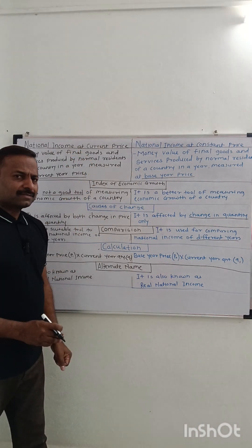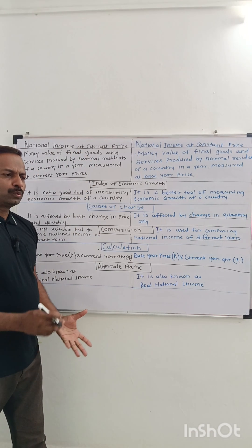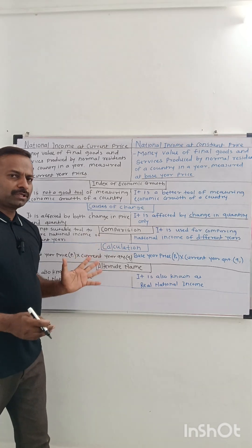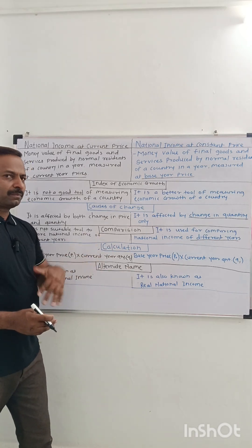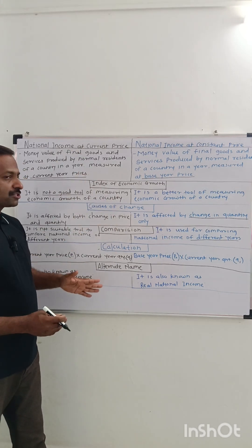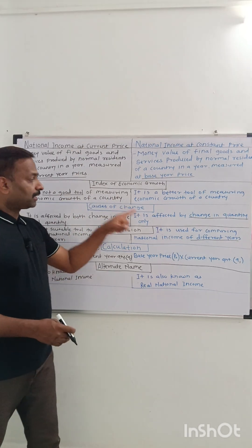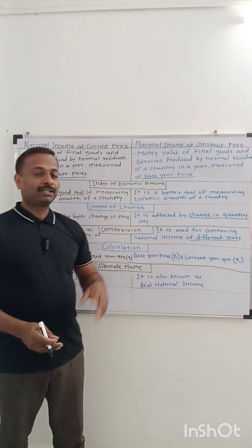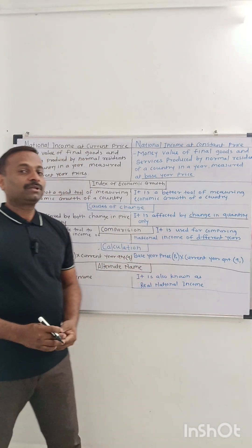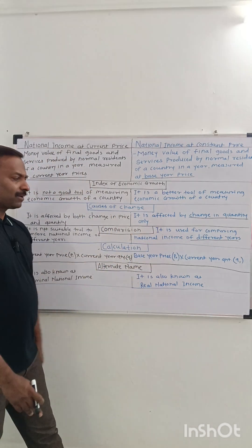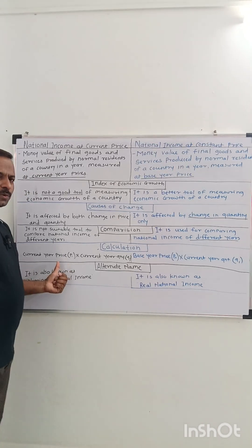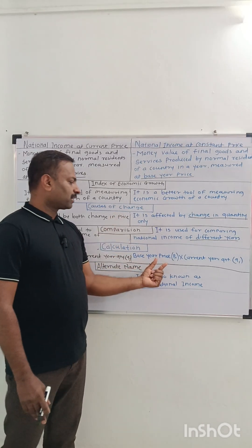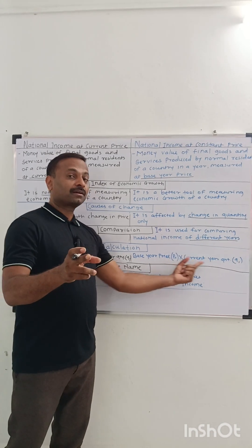Next: comparison. National income at current year prices is not a good tool to make a comparison between the national income of two years. How to calculate: simply multiply current year price by current year quantity. For base year, it is base year price multiplied by current year quantity.